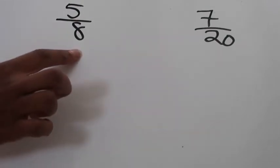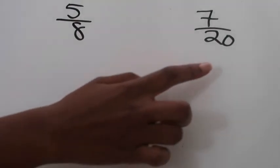The two fractions we're looking at right now are 5/8 and 7/20. Right now they have two unlike denominators, and we want to find a common denominator for them. The way we're going to do that is we're going to take the denominators of each and prime factor them.